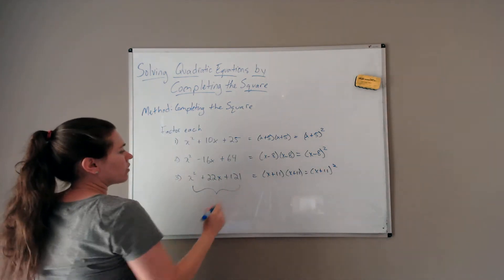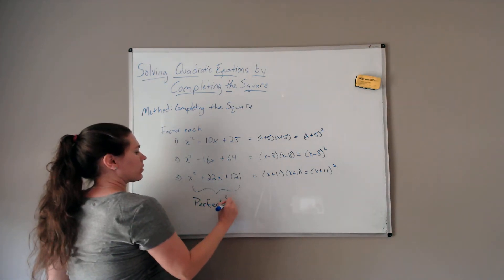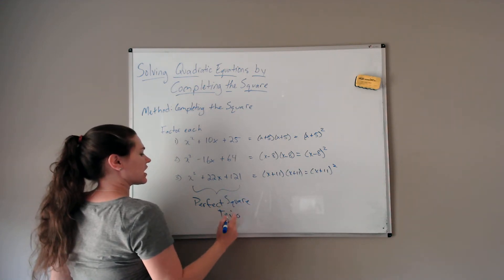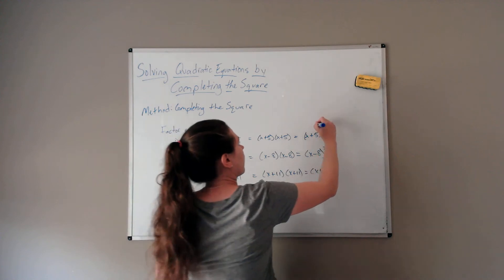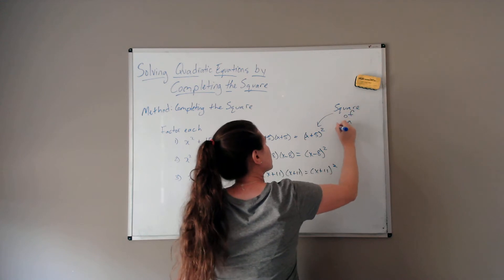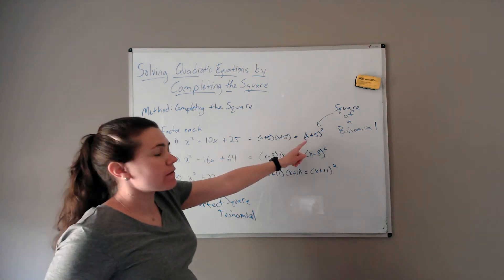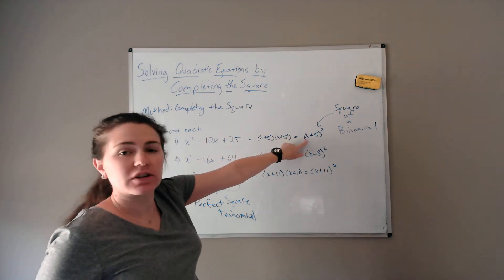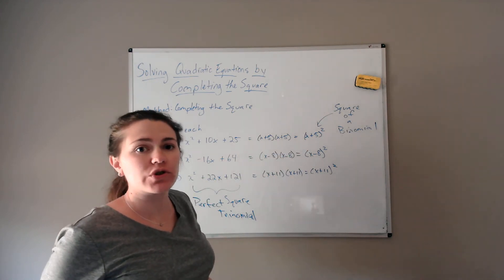When a quadratic trinomial factors to be the same factor twice, that's called a perfect square trinomial. If you hear about a perfect square trinomial, what that means is when you factor it, it factors to be the same factor twice. This expression is called the square of a binomial. All perfect square trinomials can be factored into the square of a binomial, and having your quadratic expression written as the square of a binomial is very useful when solving using completing the square.